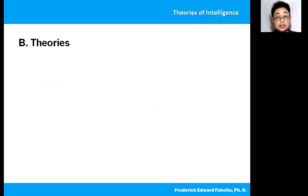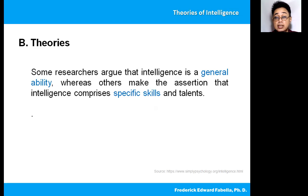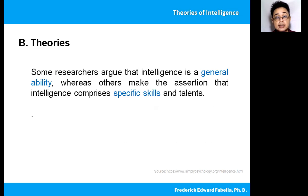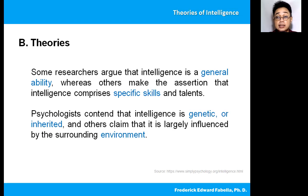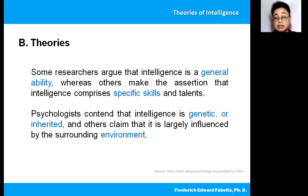Some researchers argue that intelligence is a general ability, whereas others make the assertion that intelligence comprises specific skills and talents. Psychologists contend that intelligence is genetic or inherited, but others claim that it is largely influenced by the surrounding environment.